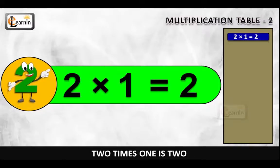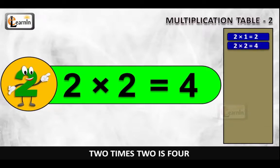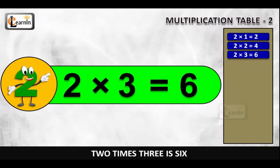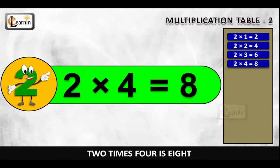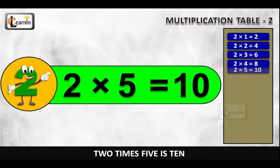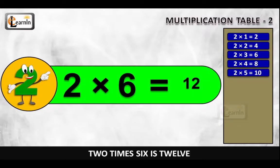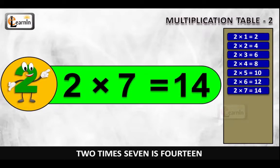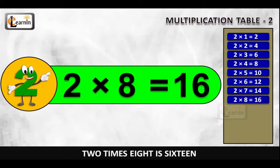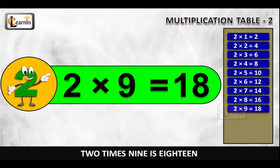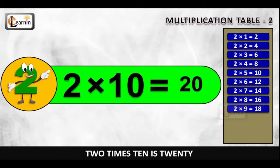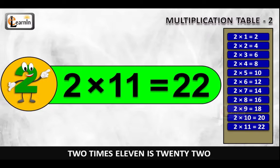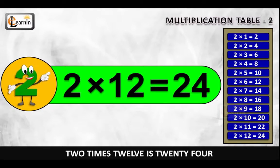2 x 1 is 2, 2 x 2 is 4, 2 x 3 is 6, 2 x 4 is 8, 2 x 5 is 10, 2 x 6 is 12, 2 x 7 is 14, 2 x 8 is 16, 2 x 9 is 18, 2 x 10 is 20, 2 x 11 is 22, 2 x 12 is 24.